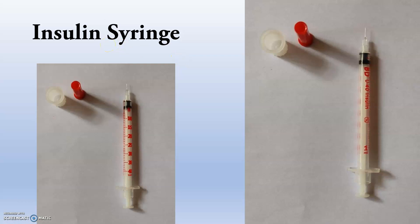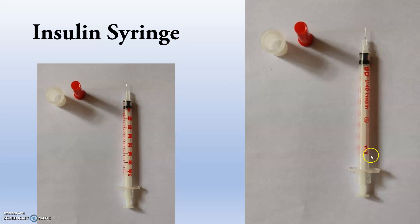This is a different type of syringe — the insulin syringe. We use insulin syringes in cases of diabetes. It has a red cover on top. This is the plunger base and this is the barrel. You can see unit markings: 10, 15, 20, 25, 30, 35, 40 units. The needle is very, very small. This is a Q40 insulin syringe — 1 ml capacity.